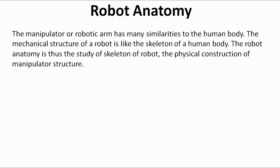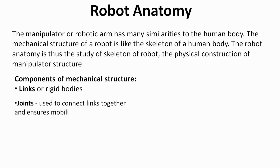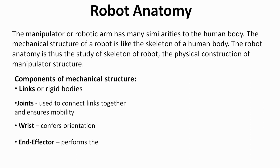In the mechanical structure of a robot there are four main components. Number one is links, that is the rigid bodies. Second is joints that connect the two rigid bodies or links together. Third one is wrist, that is used to orient the end effector, and fourth is the end effector itself that performs the required tasks — like it can be grippers or it can be a platform, etc.